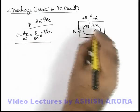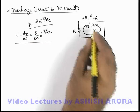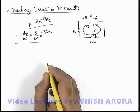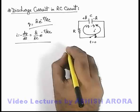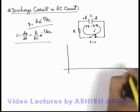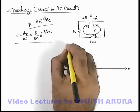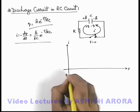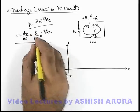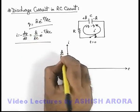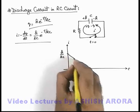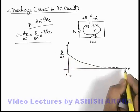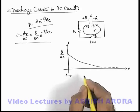This is the discharge current in the circuit due to which the charge is decreasing on the plates of the capacitor. We can also plot the variation curve of current with time. At t equal to zero, the value of current is Q/RC, and it exponentially decreases down to zero with an asymptotic behavior to the time axis.